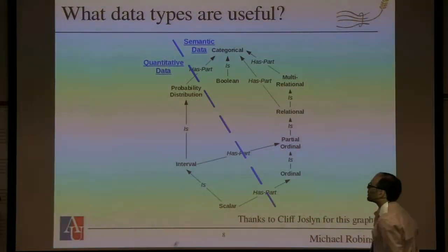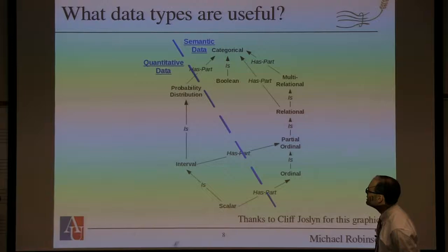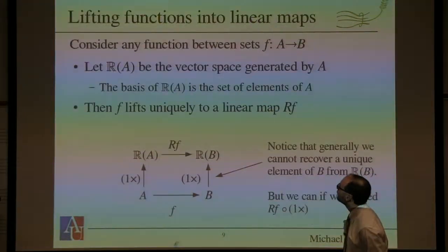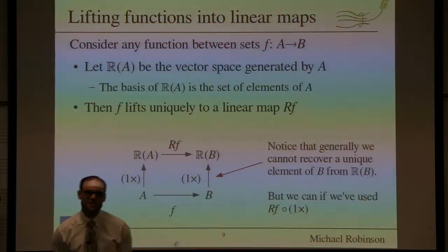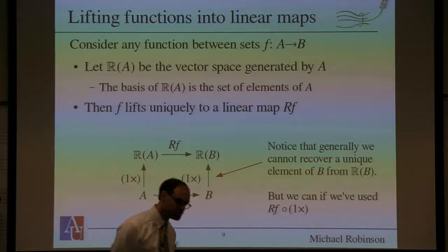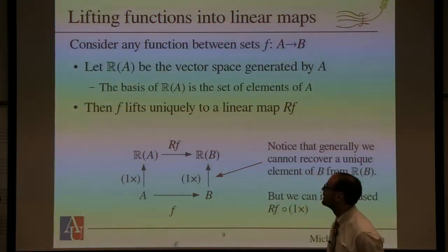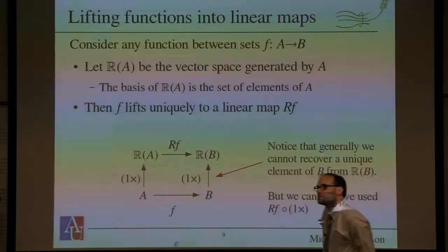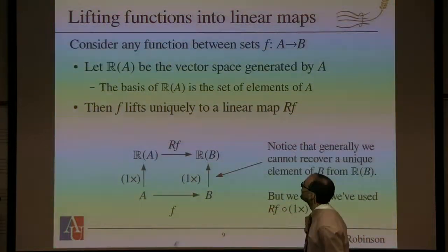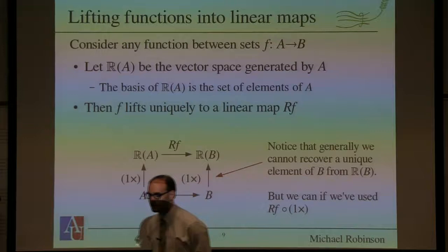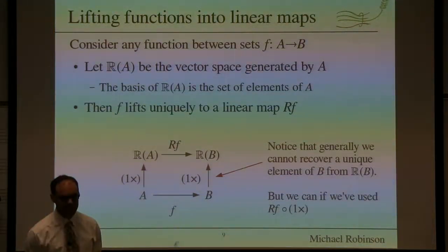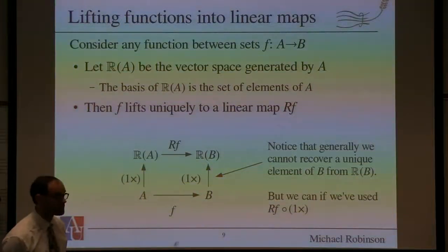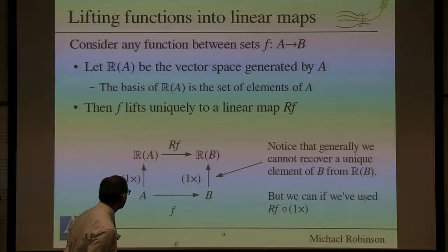Let me give you a very general construction that allows you to think about vector space data when you didn't have it to begin with. If I have just two sets A and B and a function from A to B, there's a standard trick called lifting into a linear algebraic setting that turns this into a vector space linear map. It's one possible way to turn your data into vector spaces — in some sense the most basic — and often gives you something to work with. Not always the right way, but not a bad way.